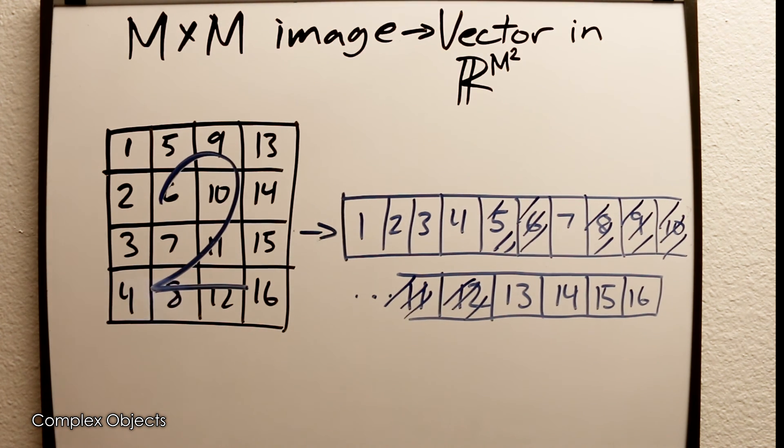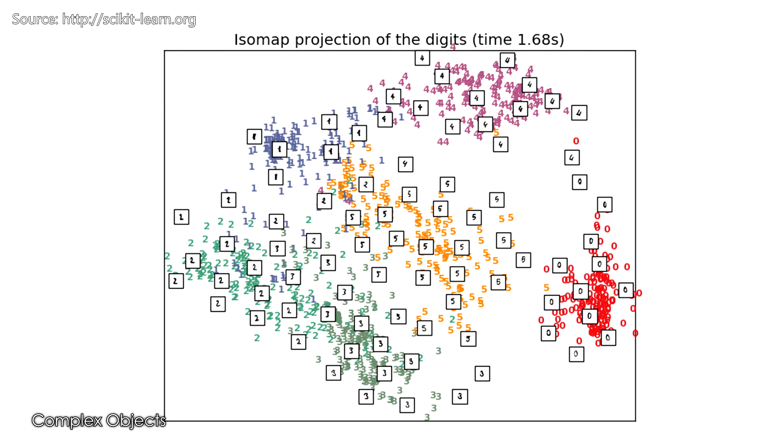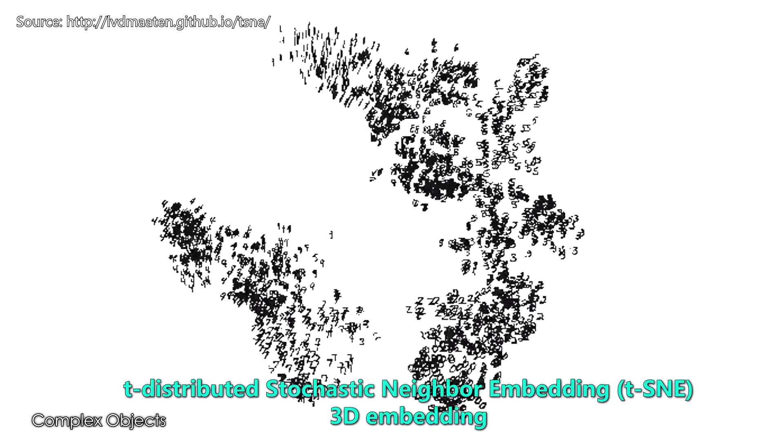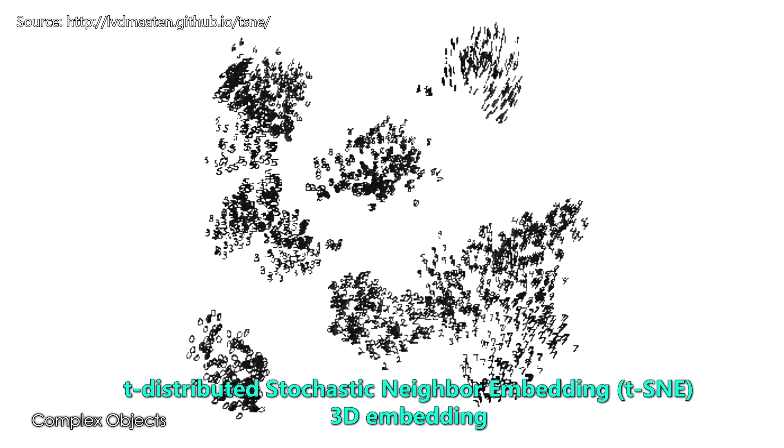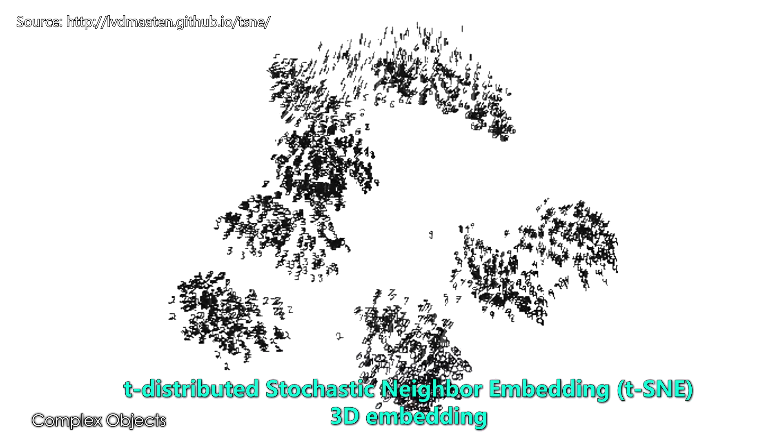Despite being in a very high dimensional space, the vectors have some closeness, some proximity to each other in that space, such that when you do dimensionality reduction on those vectors, you can pull out relationships which bring similar images close together in the representation.